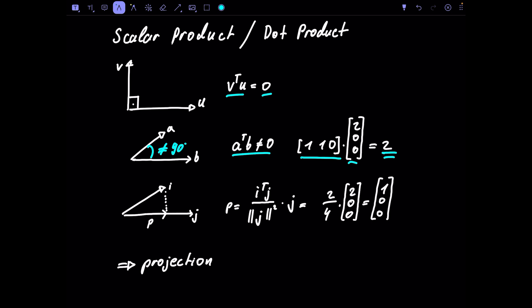We can use the scalar product to compute a projection. To project vector i onto vector j, we compute i-transpose j divided by the squared length of j, times the vector j. From this we get a scalar from i-transpose j, divided by the squared length, times the direction vector, giving us the projected result — in this case [0, 1, 0]. We use the scalar product for projection — this is very important to remember.